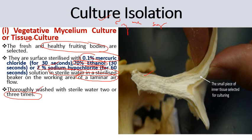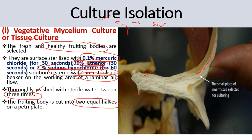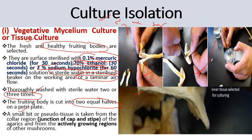The fruiting body is cut into two equal halves. Then a small bit of pseudo-tissue is cut from the collar region, which represents the junction of cap and stipe. This region is cut into a small portion of tissue called pseudo-tissue. In other mushrooms other than agaricales, other actively growing regions can be used for tissue culturing.